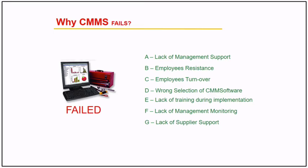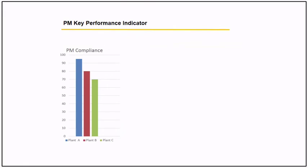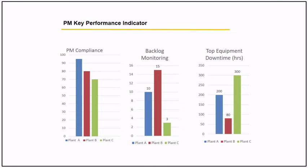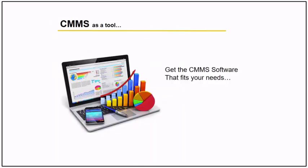Let me share some simple reports from CMMS. Here's a sample of reports for preventive maintenance performance indicators: PM compliance, backlog monitoring, and top equipment downtime. This report has a lot of details not fully shown here. You can also monitor work order compliance — PM compliance for the day, PM compliance for the month, open repair work orders, completed repair work orders, and overdue repair work orders — to help reorganize your engineering activities.